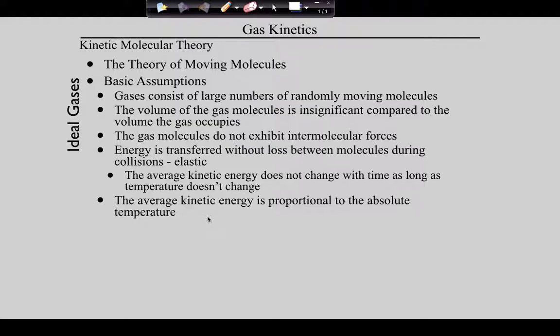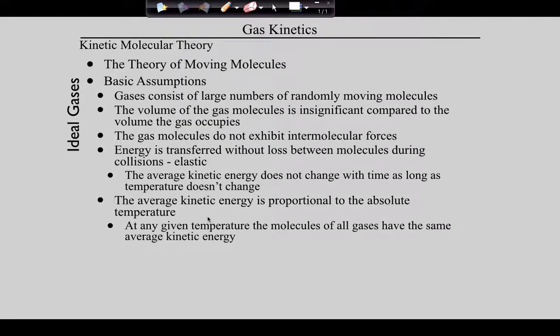The Kelvin scale is the appropriate temperature scale because it gives us a common zero point — zero Kelvin is also zero energy, and temperature cannot be negative. So when we study gases we use Kelvin because it provides a common zero point for both temperature and energy.